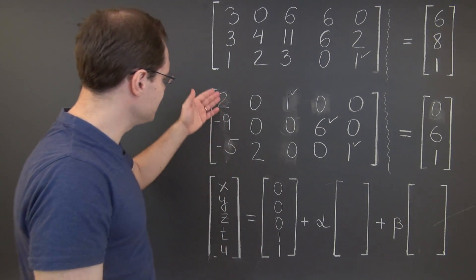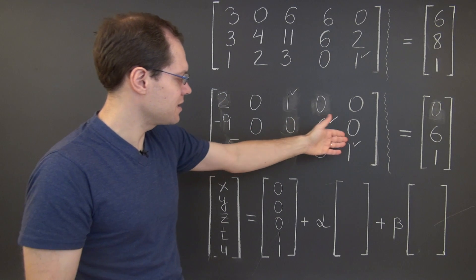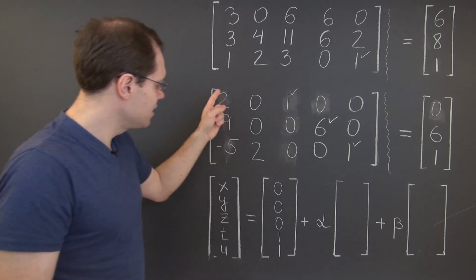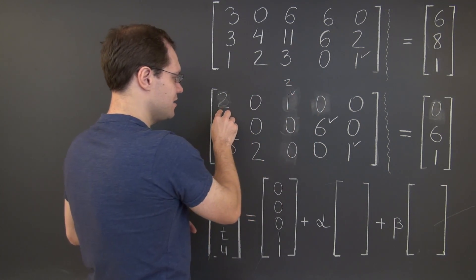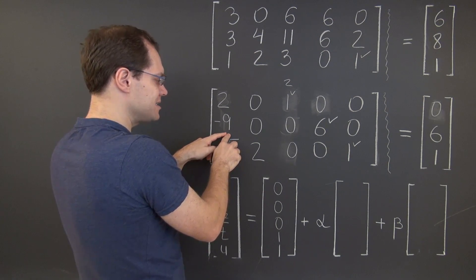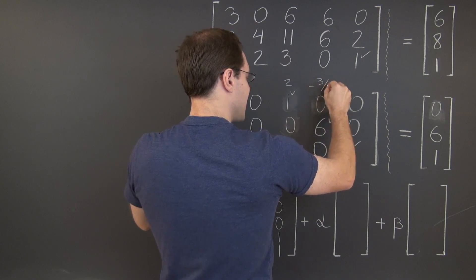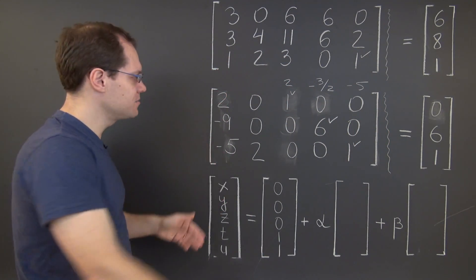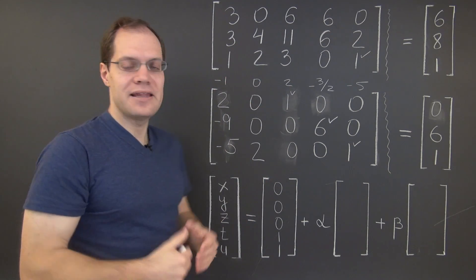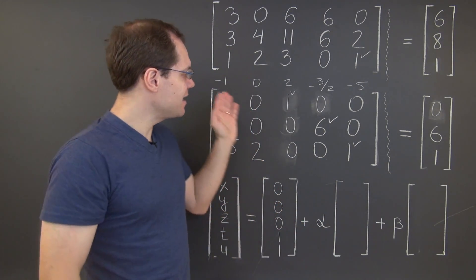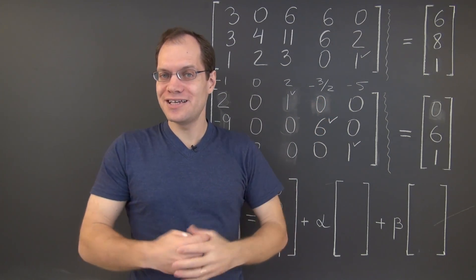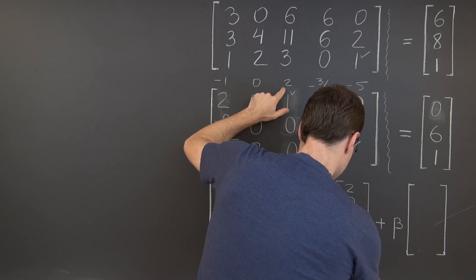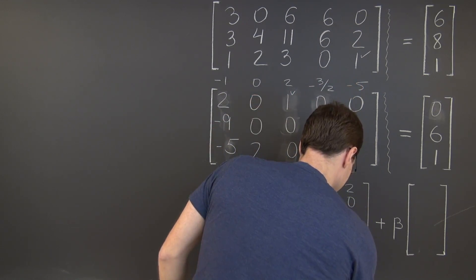Now for the null space. The first element of the null space will come from this non-pivot column. We have 3 pivot columns and 2 non-pivot columns, so the null space is 2-dimensional. Here are the proportions in which we need to take the pivot columns to represent this column: we need to take 2 of this column, minus 3 halves of this column, and negative 5 of this column. That produces exactly 1 of the first column, so we subtract it to get the zero column. In order to have integers, I will multiply by negative 2, giving us 2, 0, negative 4, 3, and 10.